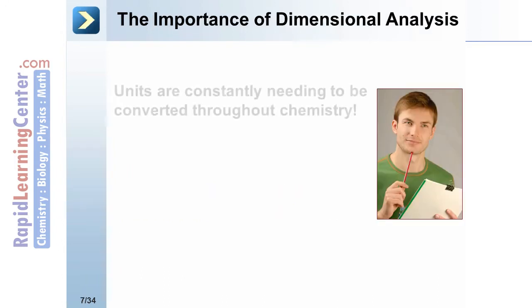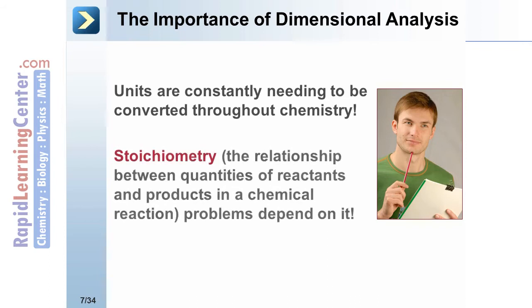Dimensional analysis is used constantly to convert units in lab and problems. The concept of stoichiometry shows the relationship between quantities of reactants and products in a chemical reaction. Stoichiometry is based on the principles of dimensional analysis and is one of the main goals of first semester chemistry.